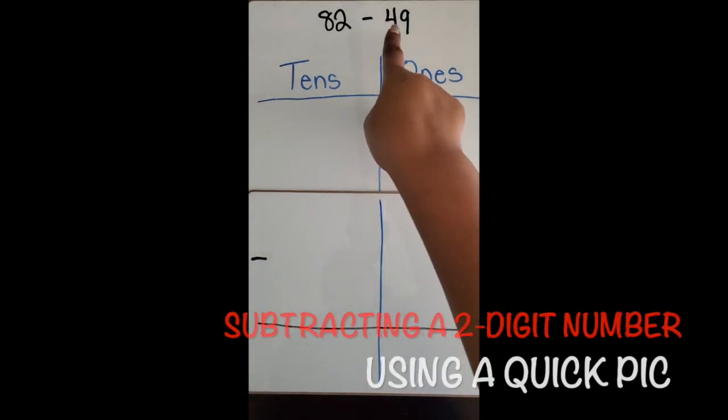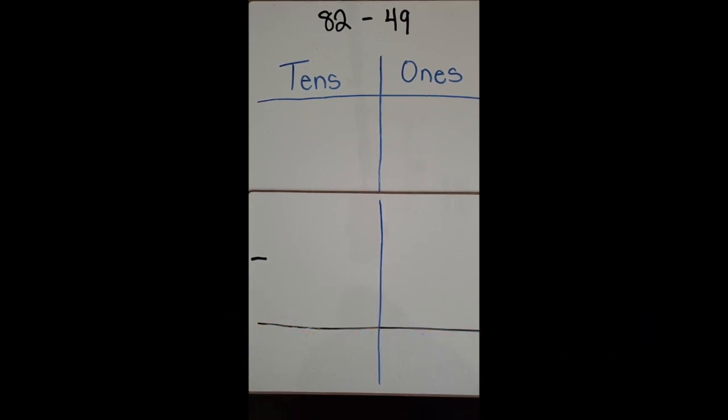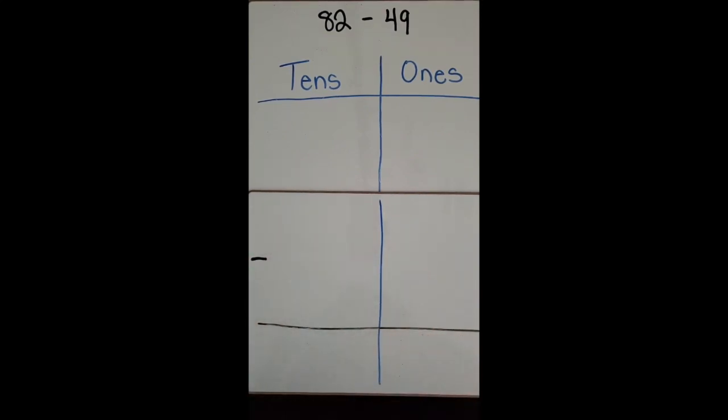We are going to subtract a two-digit number from another two-digit number using a quick pic of base 10 blocks. If you don't have these concrete manipulatives of base 10 blocks, you can always draw a quick pic of them.